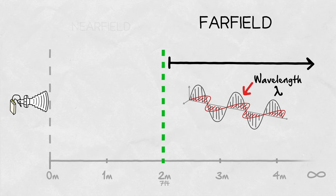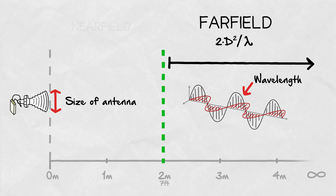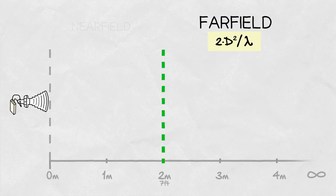The far field region is defined by the wavelength of the signal and the size of the antenna. 2 times d squared divided by lambda is the exact formula for all your nerds out there. But generally speaking, the far field region of a 30-degree horn antenna operating at 5.5 GHz starts at 2 meters and extends to infinity.